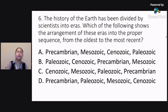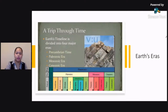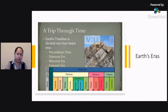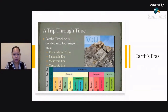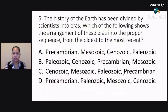Alright, let's take a look at the next slide. The correct answer for this one — it's going to show you the different eras that we have. Earth's timeline is divided into four major eras: Precambrian, Paleozoic, Mesozoic, and Cenozoic. So the correct answer there would be Letter D.